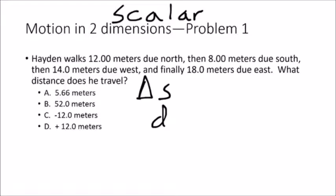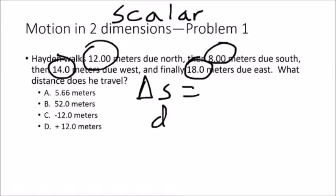So if we want to calculate the distance traveled, we simply need to add up all the distances in each segment of this trip. Hayden travels 12 meters, 8 meters, 14 meters, and 18 meters. The direction he travels those distances in doesn't matter, so we simply add those up: 18 plus 14 plus 8 plus 12, and we end up with a total distance traveled, or delta S, of 52 meters.